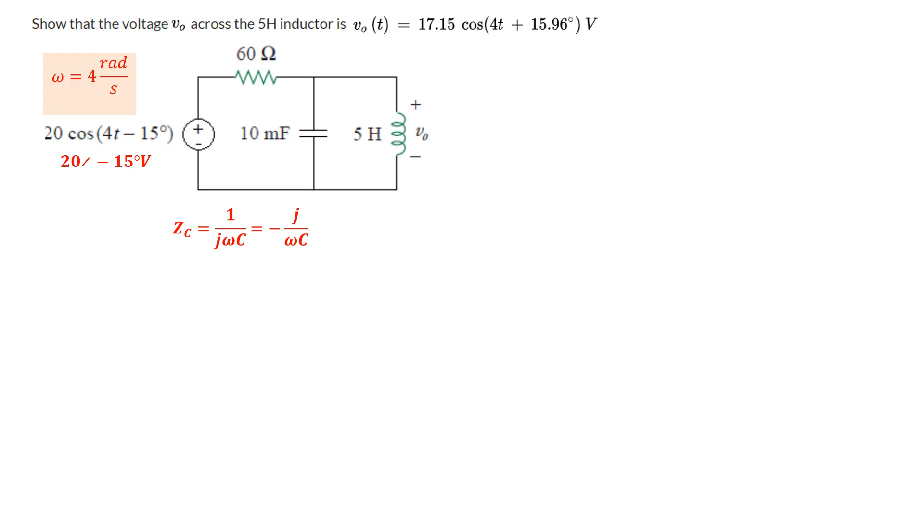We know omega is 4, we know the capacitor is 10 millifarad, so 10 times 10 to the power minus 3 farads. So if we substitute all of that, we basically get 40 times 10 to the power minus 3 in the denominator, which leads us to minus j25 ohms for the impedance due to the capacitor.